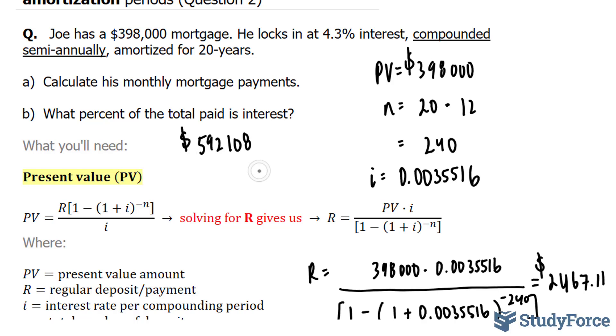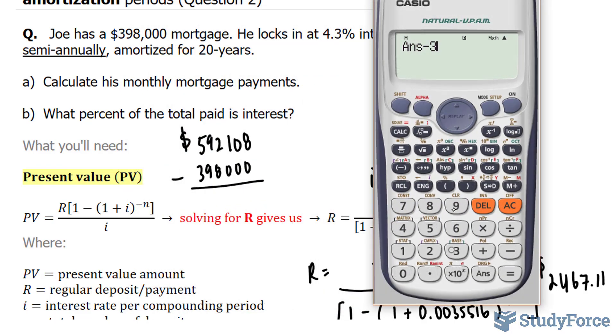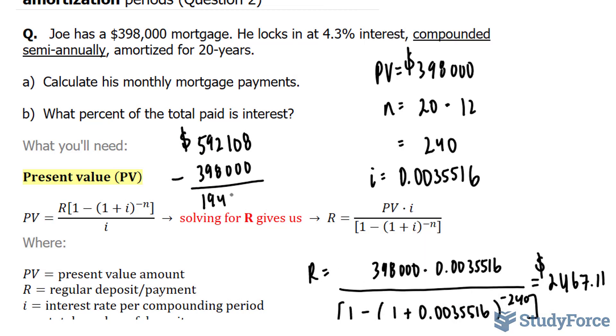Now that is a whole lot more than what he obtained at the beginning. So to find out how much interest he is paying percentage-wise, we need to take this number next and subtract it by 398. This gives us the difference. So taking this number and subtracting it from 398 gives us 194,108.